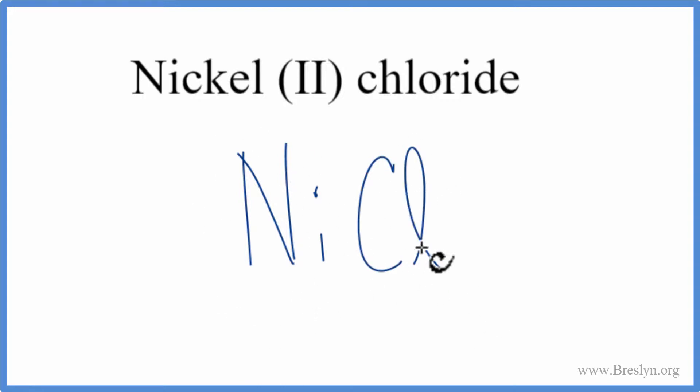Nickel, that's a metal. Chlorine's a non-metal. So we have an ionic compound. We need to make sure the charges all add up to zero, that they have a net charge of zero.